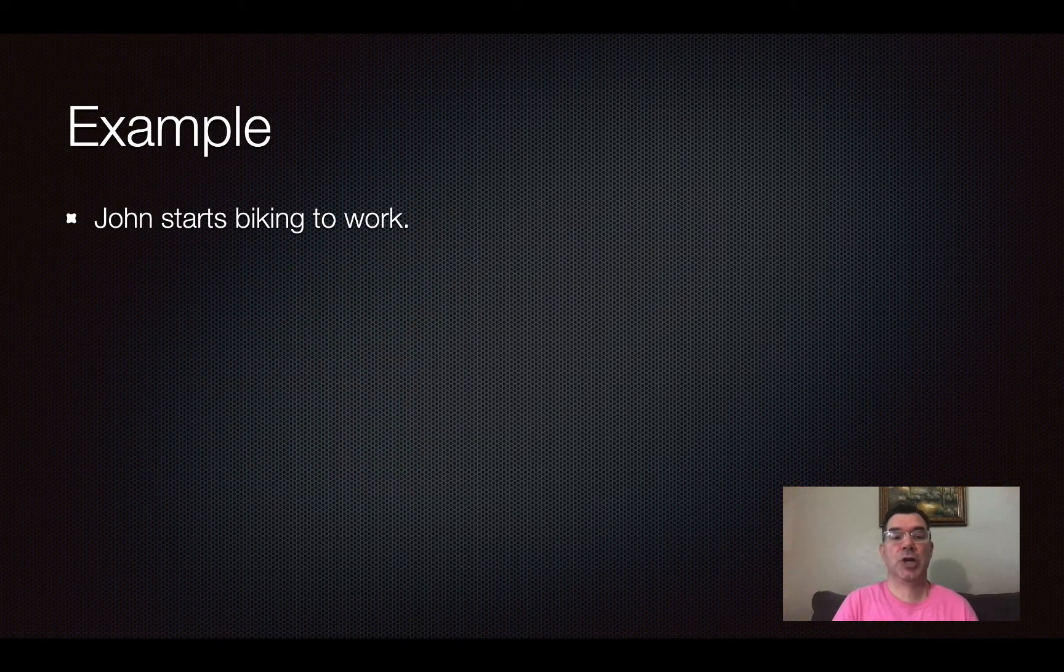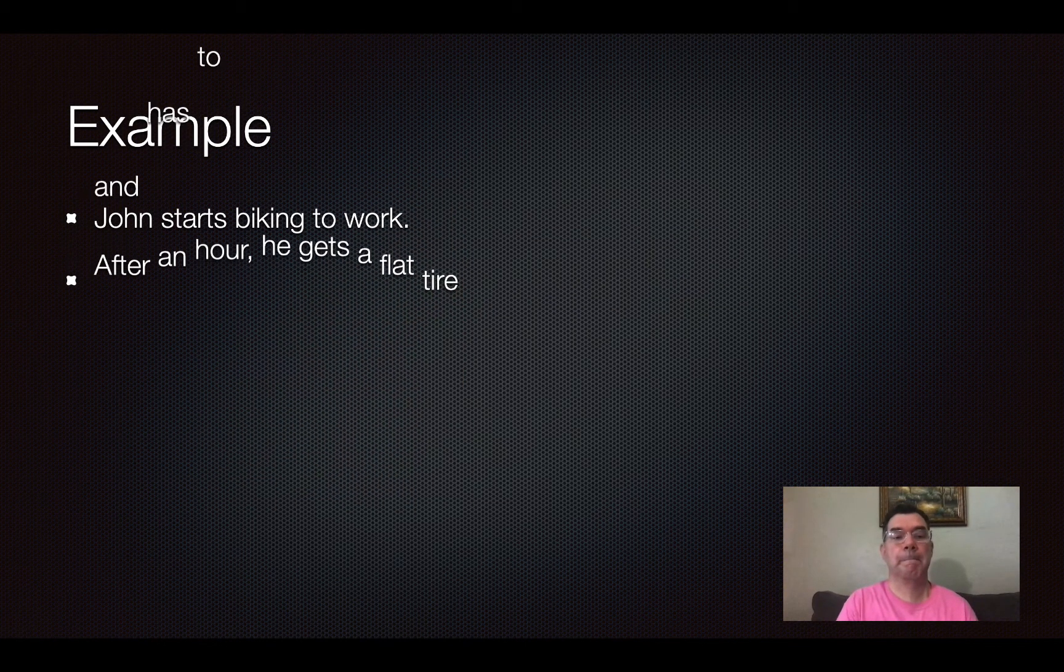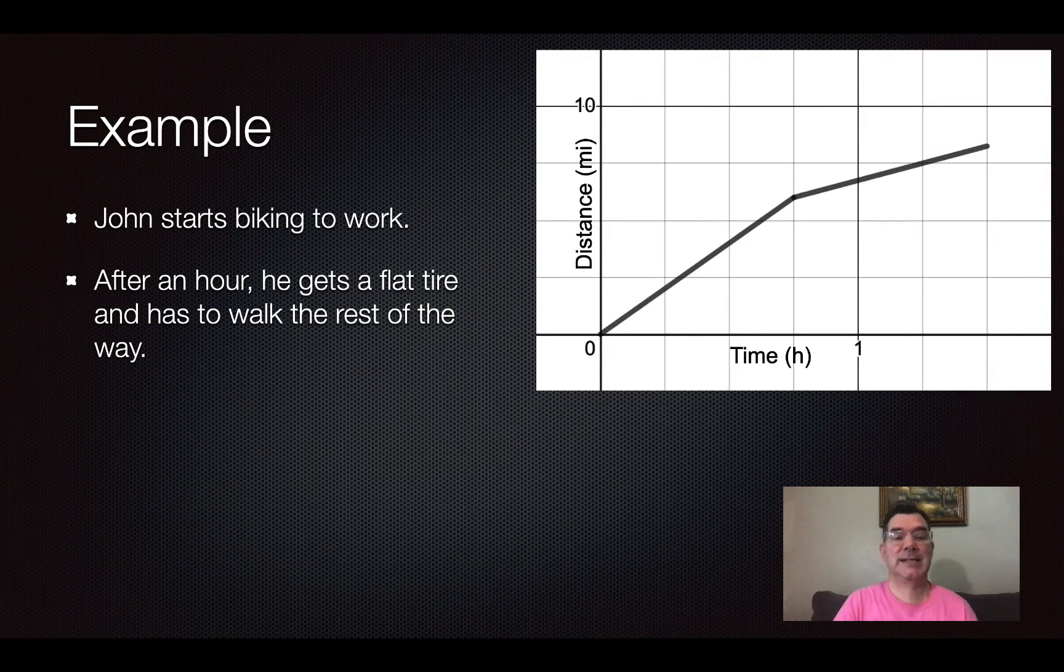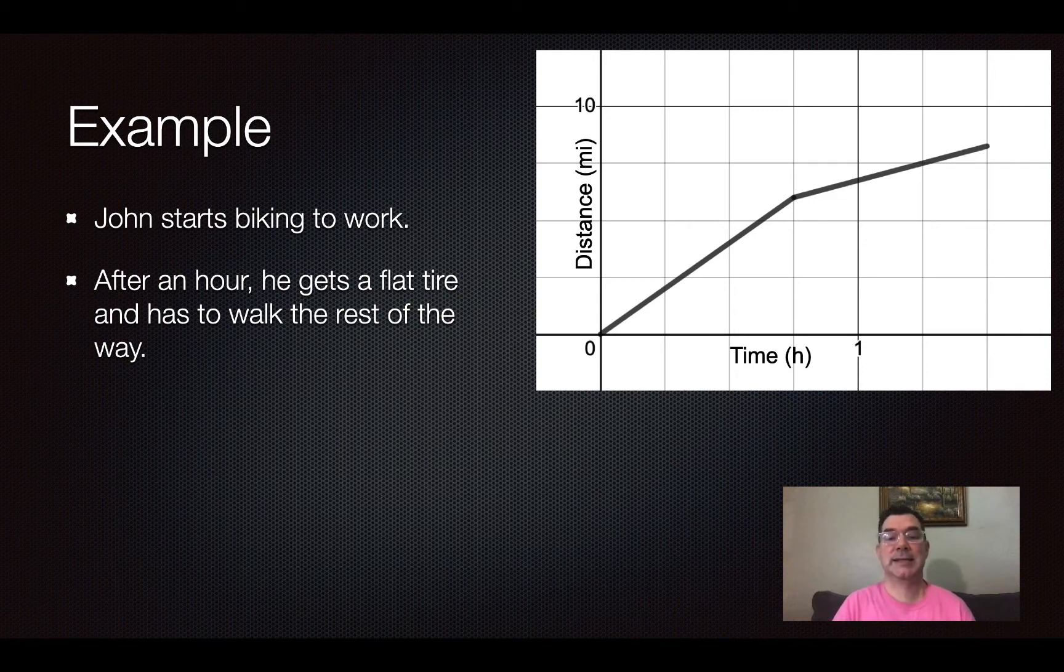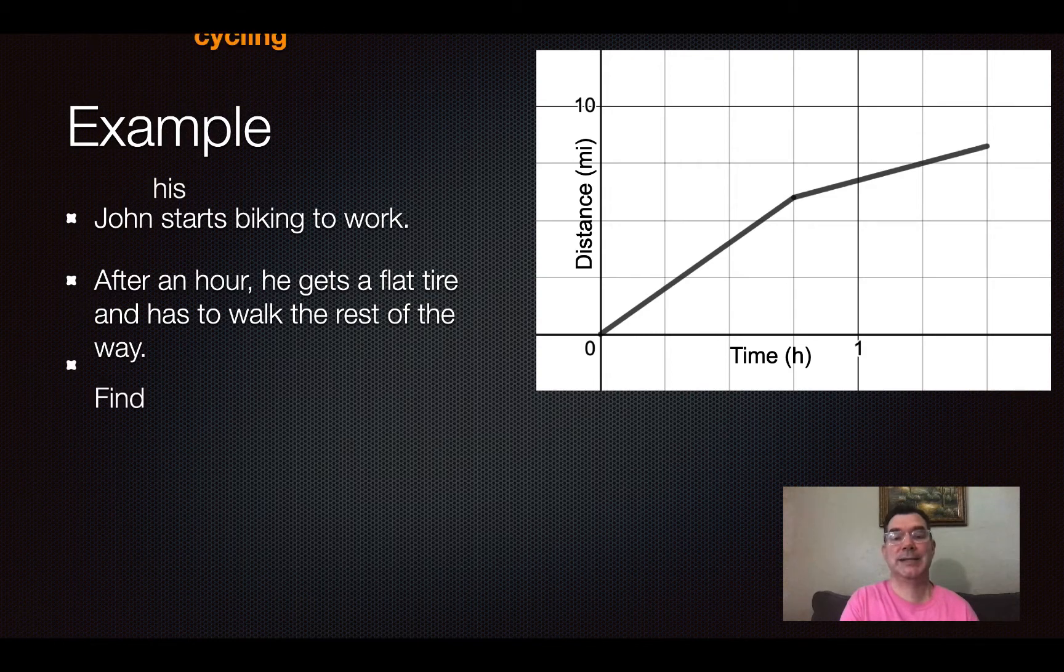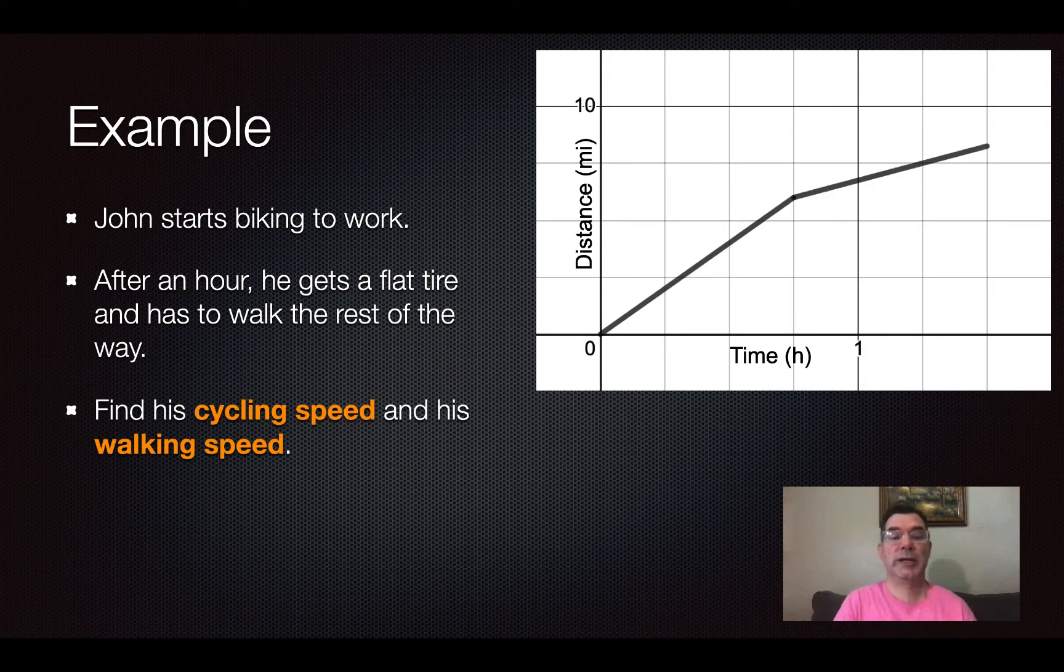Here's an example. John starts biking to work and after an hour he gets a flat tire and has to walk the rest of the way to work. There's a graph of the time that has passed and the distance that he has traveled in that time. Time is measured in hours and distance is measured in miles. We need to find his cycling speed and his walking speed.